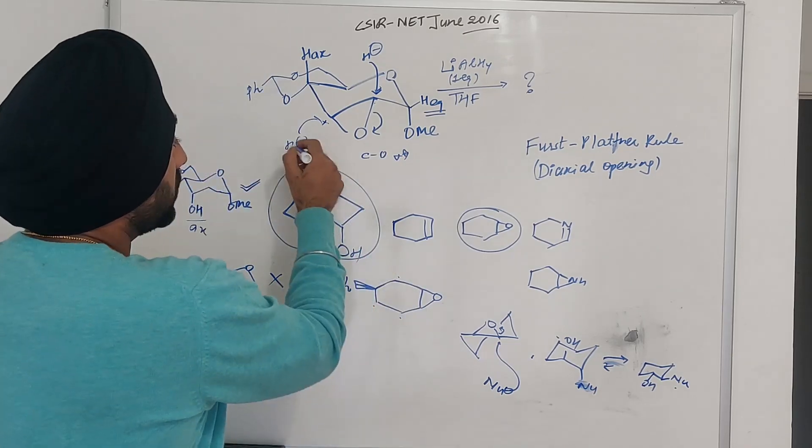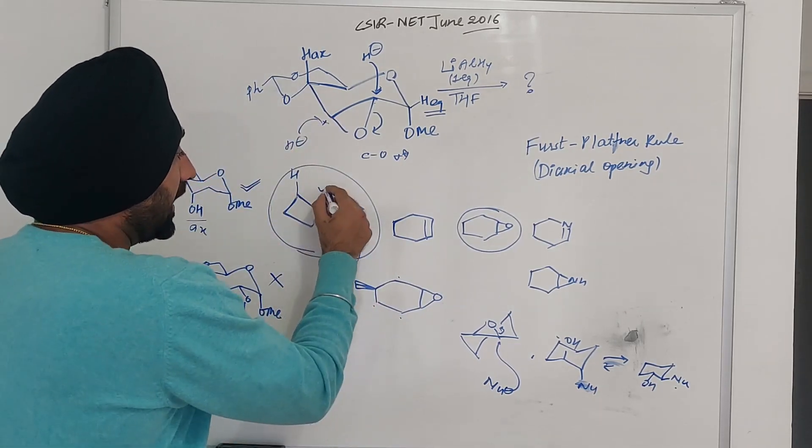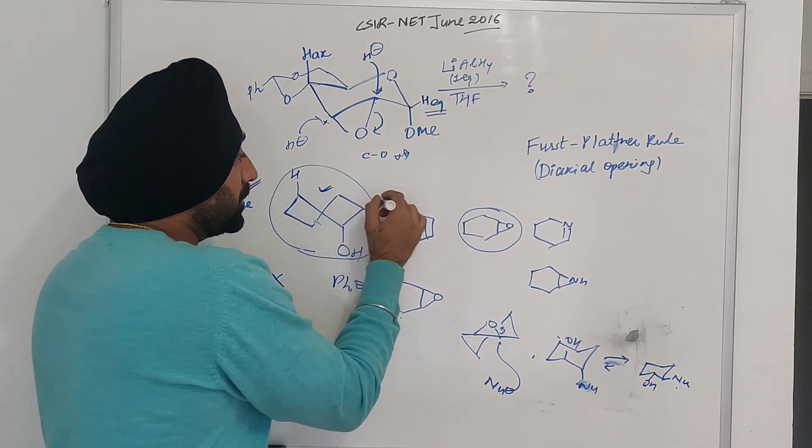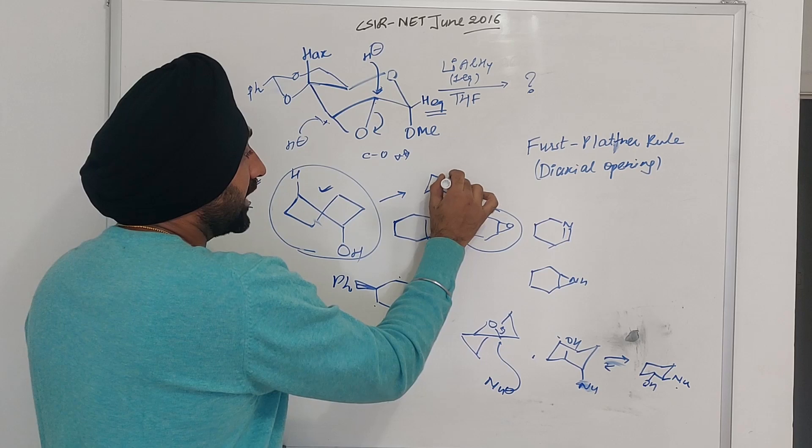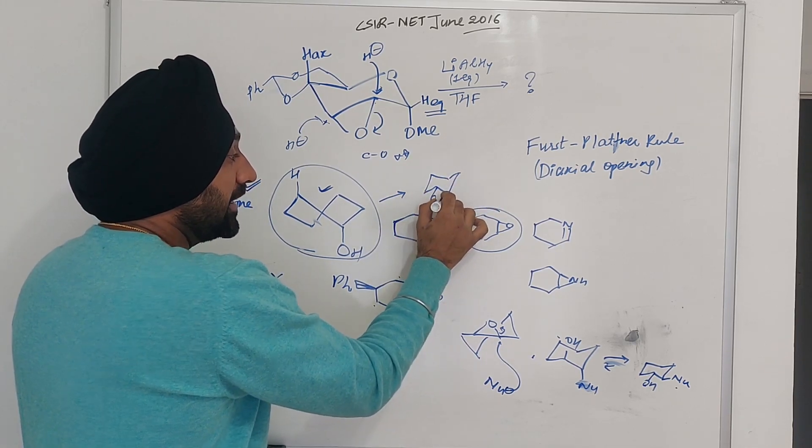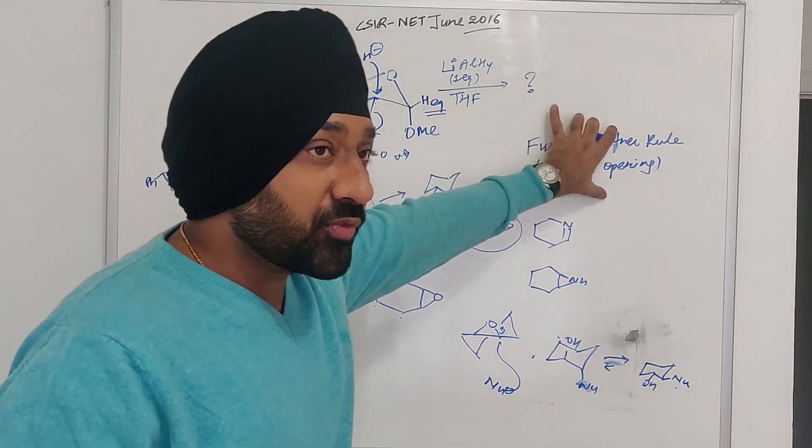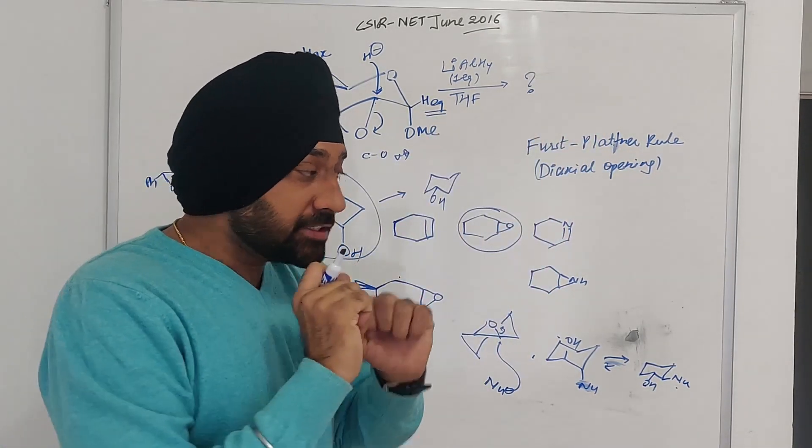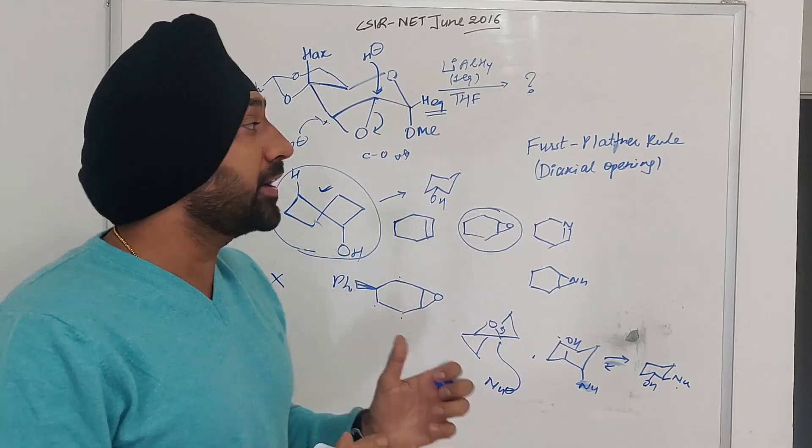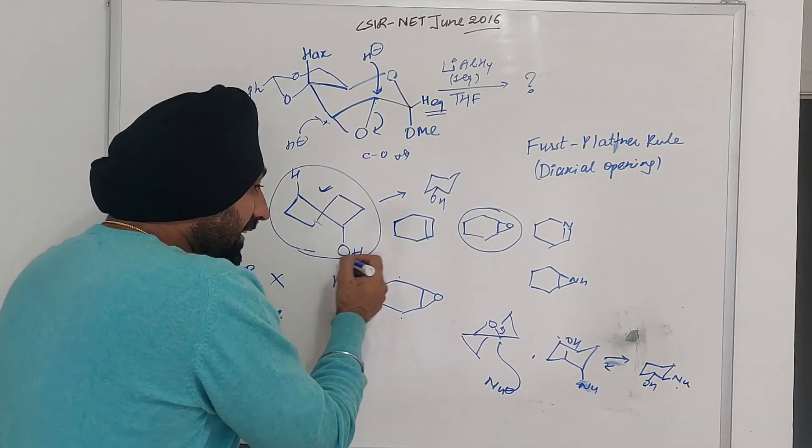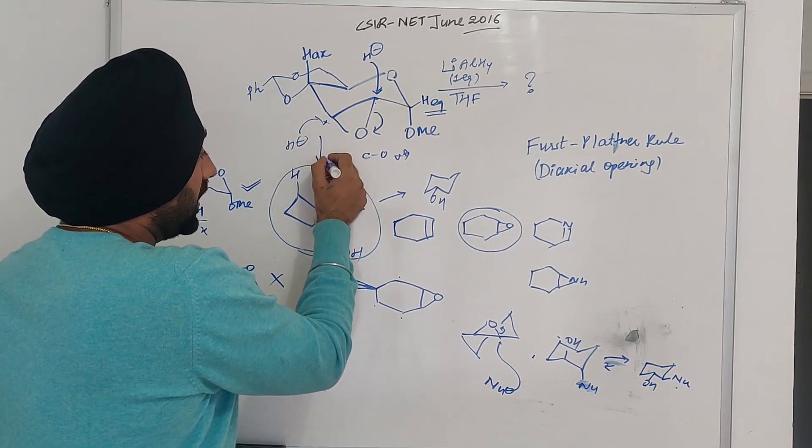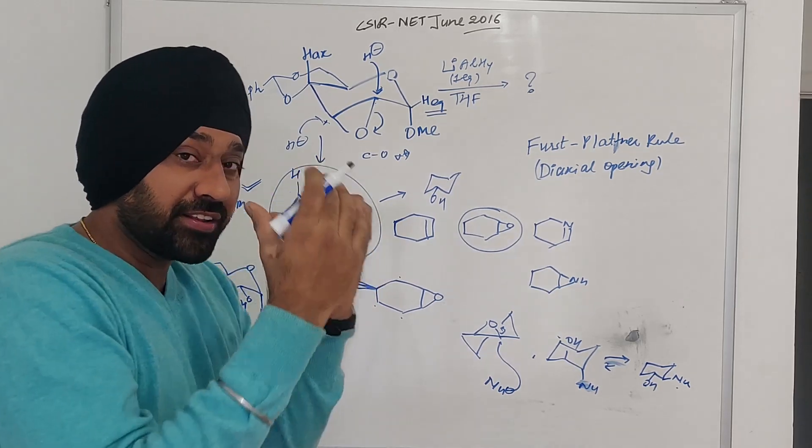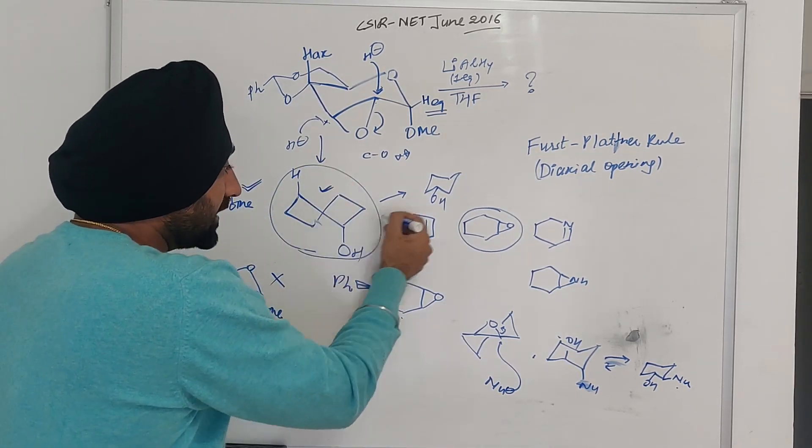What is happening? It will happen when the attack happens. Although the high-energy conformer will become a molecule with your OH in the equatorial condition. But what does the First-Platiner principle say? It says that it is not the stability of the final product that is important. It is this barrier that a molecule has to cross. Meaning, when it is attacking, to reach this strained-looking intermediate or transition state, there is a barrier that is associated.